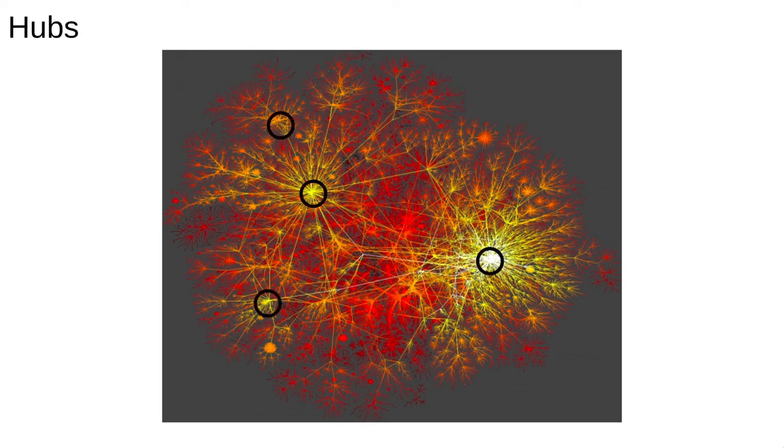The second property are hubs. I've highlighted a few. Real networks have hubs. These are nodes which are much more highly connected than average. They are responsible for the long tails in the degree distribution.